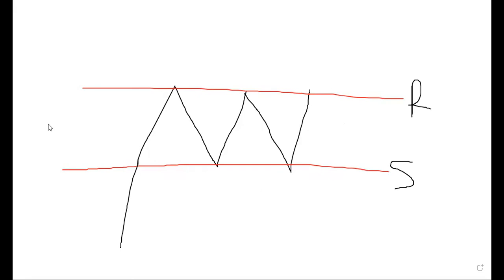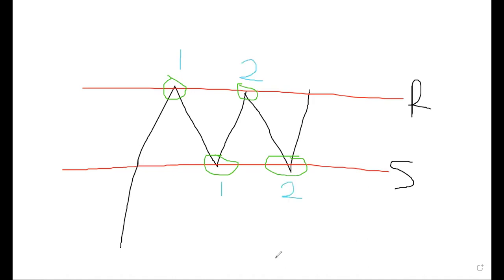At this place there are two major swings — this is swing one, this is swing two. After your swing one and swing two, I can call this one, I can call this two, I can call this one. Listen carefully: if you don't have a complete situation like this — swing one and two, swing one and two — you cannot make a decision on trading the bounce.